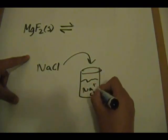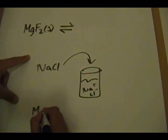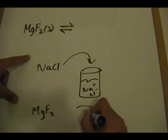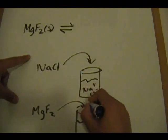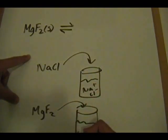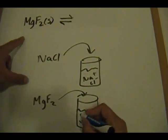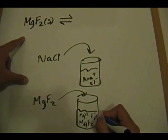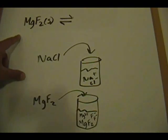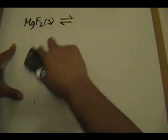If we throw magnesium fluoride into a beaker full of water, we still have the solid compound settled on the bottom, while only a few magnesium²⁺ and fluorine⁻ ions are generated. That's what solubility is — the degree to which a compound breaks up into its constituents.